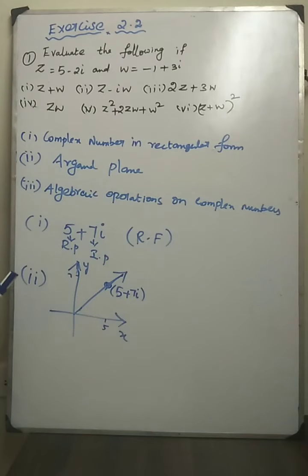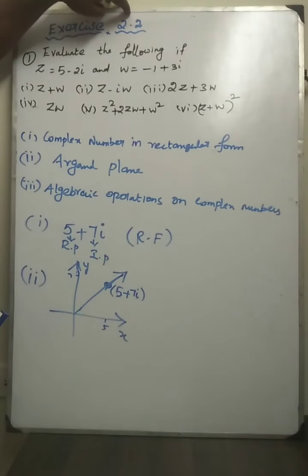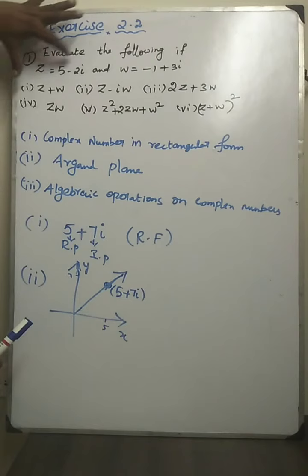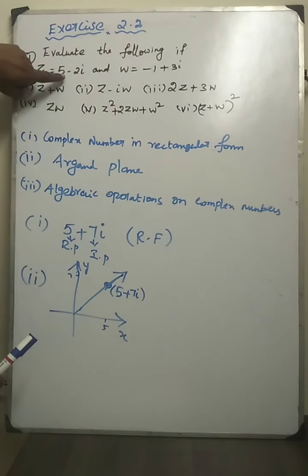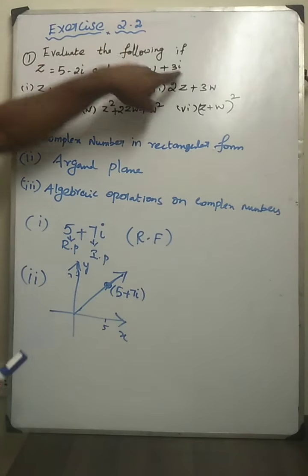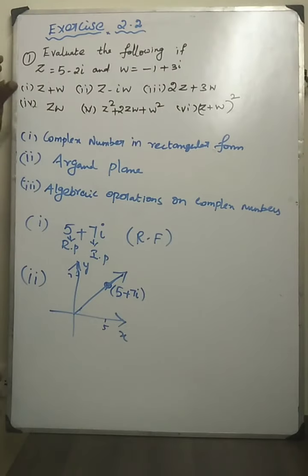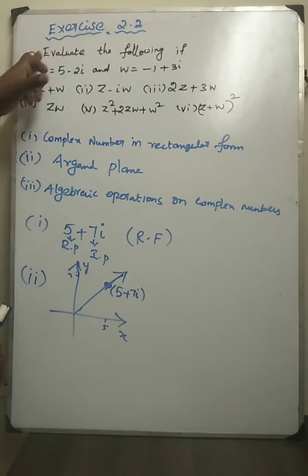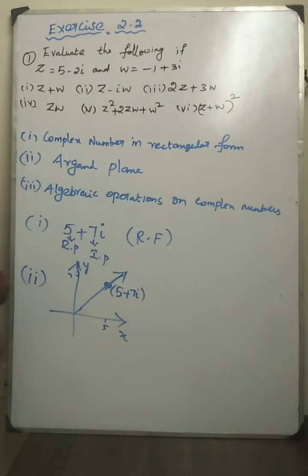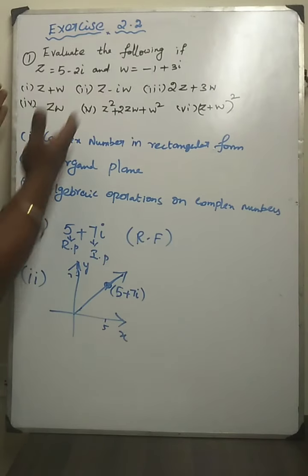Good morning students. Today we are going to start Exercise 2.2. The first problem: evaluate the following, where z is equal to 5 minus 2i and w is equal to minus 1 plus 3i. Find out the six subdivisions.